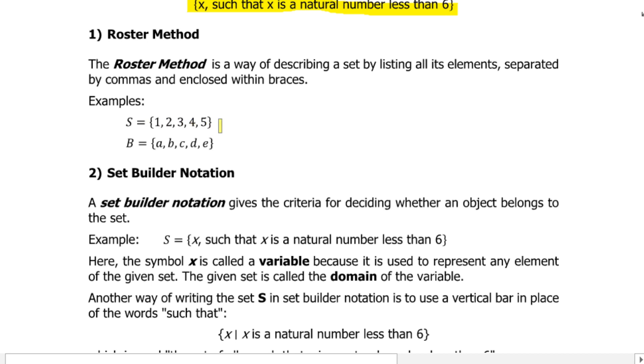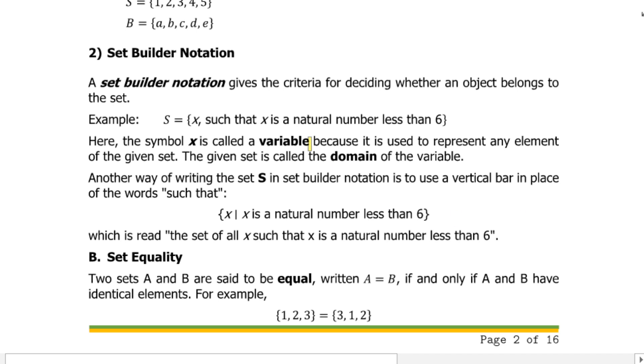The second way to write a set is the set builder notation. A set builder notation gives the criteria for deciding whether an object belongs to the set. Our example above is S equals x such that x is a natural number less than 6. Here, the symbol x is called the variable because it is used to represent any element of the given set. The given set is called the domain of the variable.